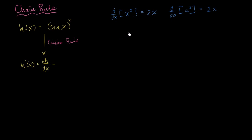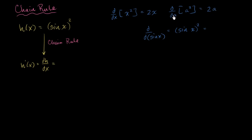Now I'll do something that might be a little bit more bizarre. What if I were to take the derivative with respect to sine of x of sine of x squared? Well, wherever I had the x's or the a's, I just replaced it with sine of x. So this is just going to be 2 times whatever I'm taking the derivative with respect to — here it's sine of x — so it's 2 times sine of x.